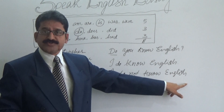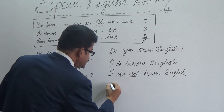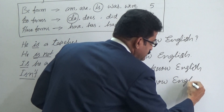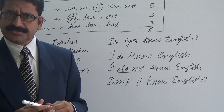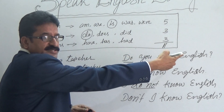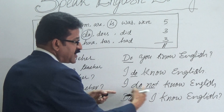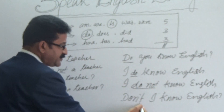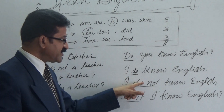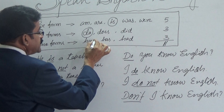If I know English, the positive statement is 'I know English.' If I don't know, the negative statement is 'I do not know English.' And even though you know that I know English, if you ask again using negative interrogative, that is: 'Don't I know English? Without knowing, how can I teach you English?' Like this, we used DO to make a question, a positive statement, a negative statement, and a negative interrogative.